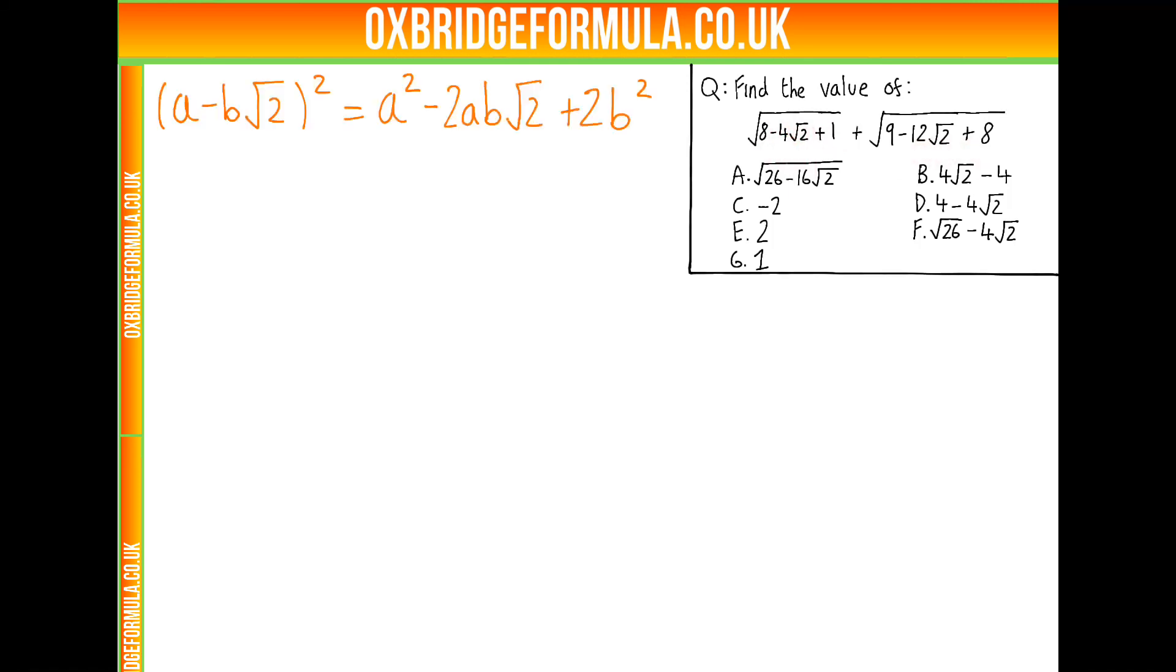So let's have a look at this. So (a minus b root 2) squared, for some a and b, is this. And we see that this very closely mimics the form of the inside of these roots. So maybe by correctly choosing a and b, we can get the inside of these roots in this form, and then we'll know what to do.